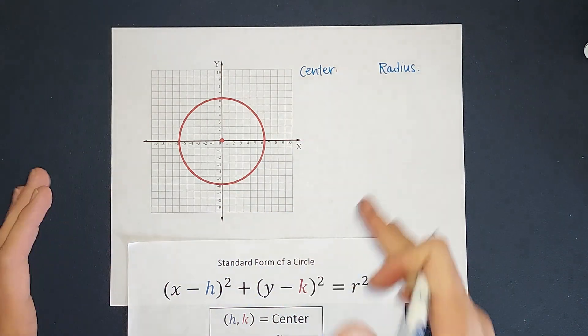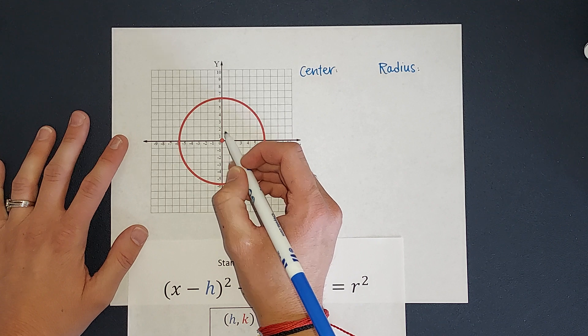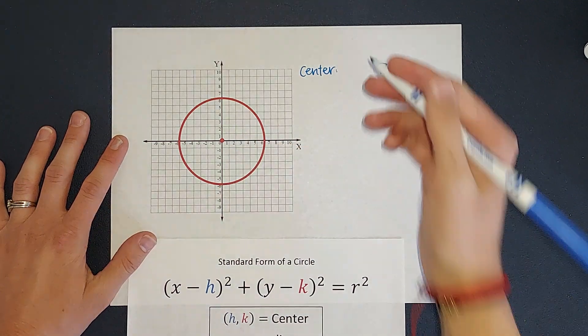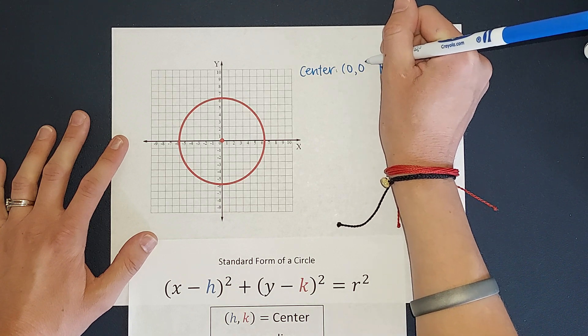So my center and radius. My center is going to be an ordered pair. It's the center of my circle, so what point is that? That's the origin, right? That is zero, zero. The center of this circle is zero, zero.